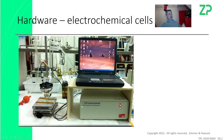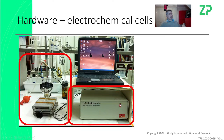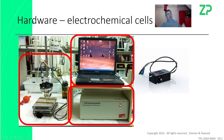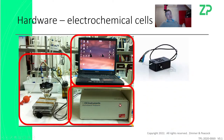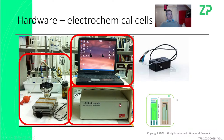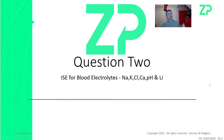That setup where you have a potentiostat and everything in a glass vessel with a glassy carbon electrode — you need to change your setup. Use screen-printed electrodes instead, because that's more reflective of what you're trying to do, and bring drops of sample to the sensor. That configuration is much closer to blood testing on glucose strips.